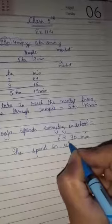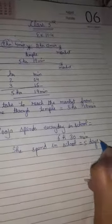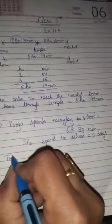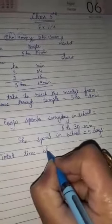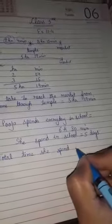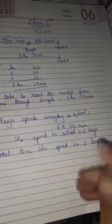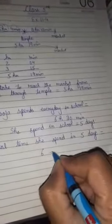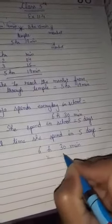She spends in school is equal to 5 days. Then total time she spends in 5 days is equal to 6 hours 30 minutes multiply with 5.